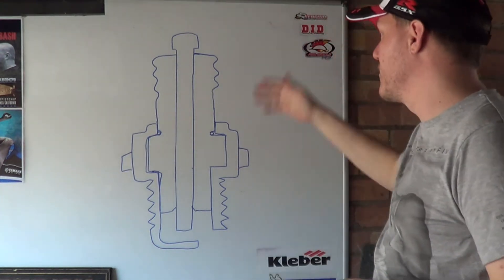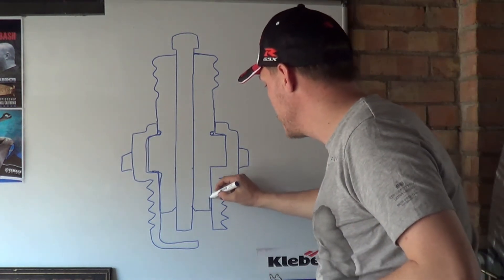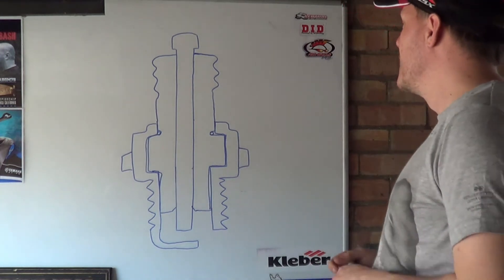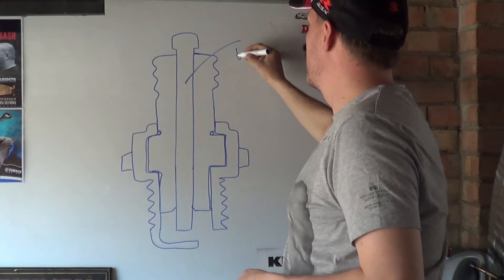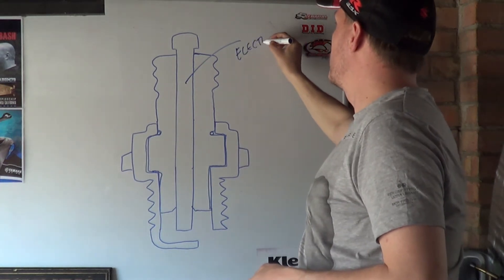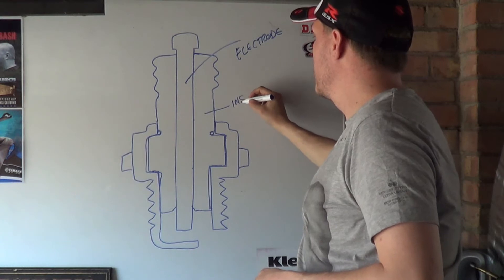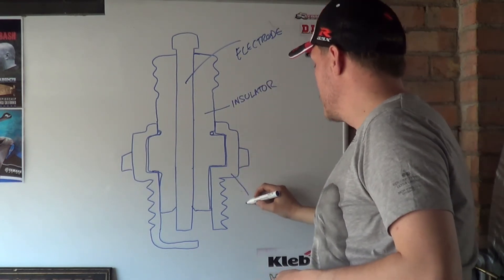So I've done a little sketchy drawing of a spark plug and it's really crap but we'll just go with it anyway. So basically there are three main components: your electrode, your insulator, and then basically just your body.